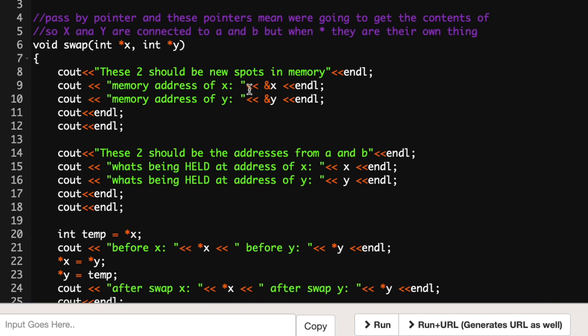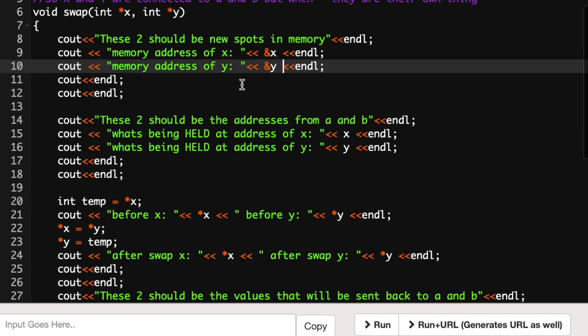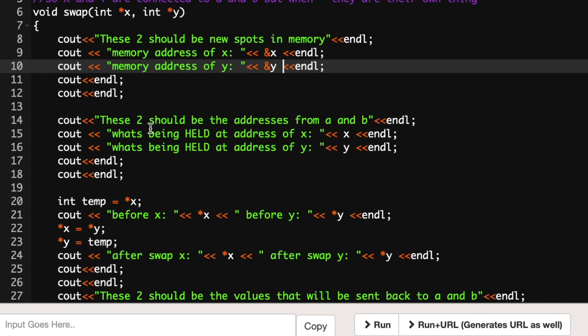I have a bunch of printout statements so that you guys can see what's going on. These two should be two totally new spots in memory for x and y. I use the ampersand to get the address of so that I can show you that yes these are two new completely allocated spots in memory.